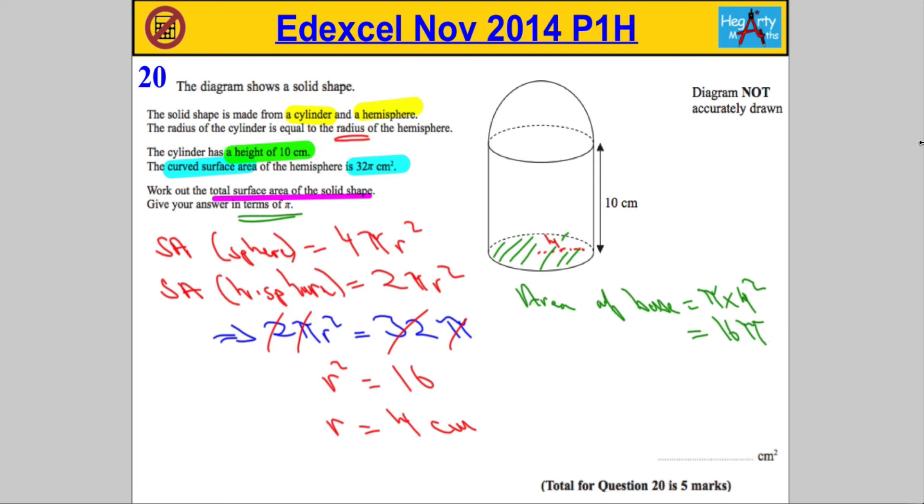So I've got the base. Like I said, I'm going to want the curved surface area of the cylinder. Now, in order to get that, we're going to need the circumference of the cylinder times by its height.